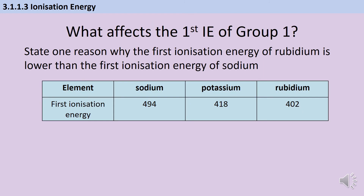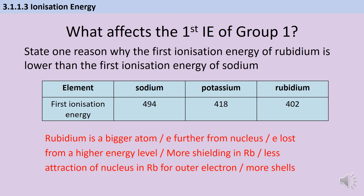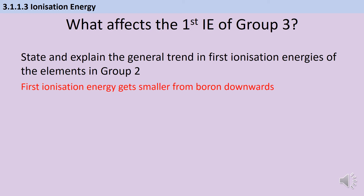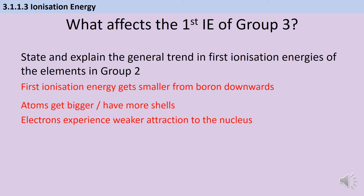For the question asking why the first ionization energy of rubidium is lower than that of sodium, any of these answers would get credit: rubidium is a bigger atom; its electrons are further from the nucleus; the electron is lost from a higher energy level; there is more shielding due to more shells; there's less attraction from the nucleus to the outer-shell electron; or simply that it has more shells. The overall trend down group one is that first ionization energy decreases because atoms get bigger, have more shells, and electrons experience weaker nuclear attraction.